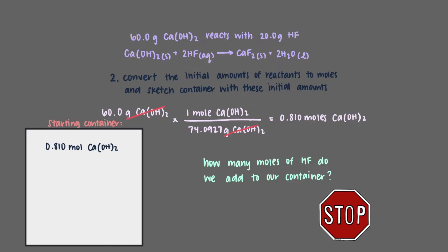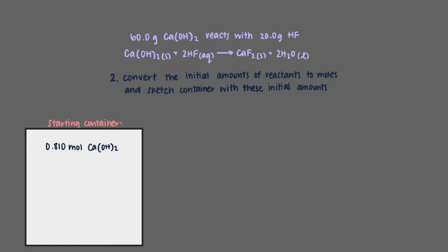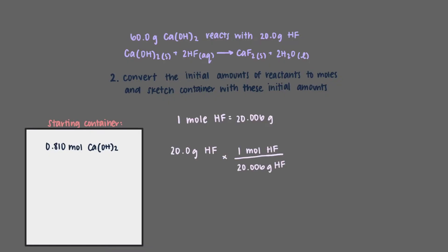How many moles of hydrogen fluoride do we add to our container? We'll use the molar mass of hydrogen fluoride to determine the number of moles present. The molar mass of hydrogen fluoride is 20.006 grams per mole. When we use this to convert to moles, we get that we have 1.00 mole of hydrogen fluoride in our container. Now we have containers that fully describe the initial state of our system.